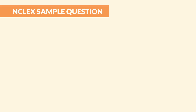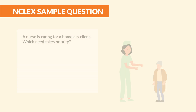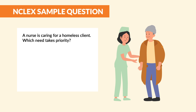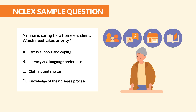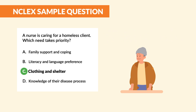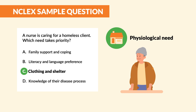Here's an NCLEX sample question: a nurse is caring for a homeless client. Which need takes priority? Go ahead and pause the screen and look at the options. If you chose option C, clothing and shelter, you would be correct. Because this is a physiological need. Without warmth or shelter, survival is threatened, and everything else can wait.